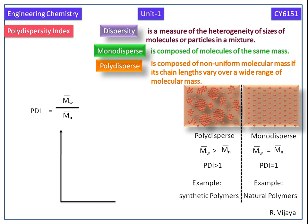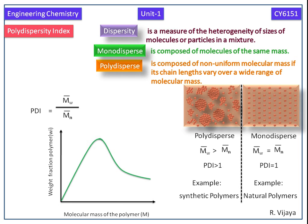Now we draw a graph between weight fraction of polymer and molecular mass of the polymer. This graph is for polydispersity index, i.e. PDI. For the blue color graph, for the green color graph it is greater than 1. Thank you.